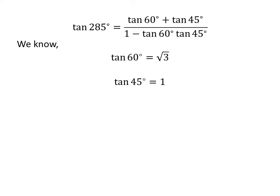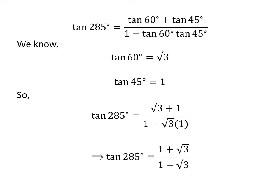We plug in these values in the above expression. We get tangent of 285 degrees is equal to square root of 3 plus 1 upon 1 minus square root of 3 times 1. Further simplification gives us tangent of 285 degrees is equal to 1 plus square root of 3 upon 1 minus square root of 3.